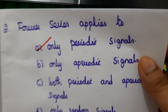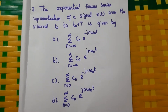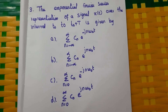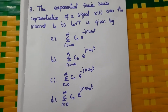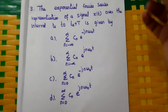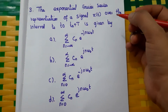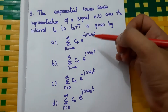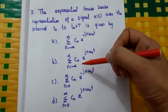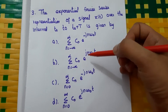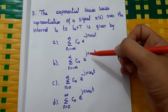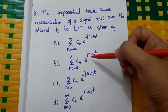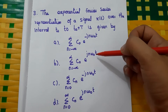Third question: the exponential Fourier series representation of a signal x(t) over the interval t₀ to t₀ + T is given by the summation from n = −∞ to +∞ of cₙ e^(+jnω₀t). So here the answer is B.